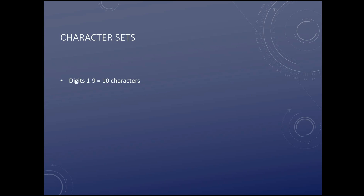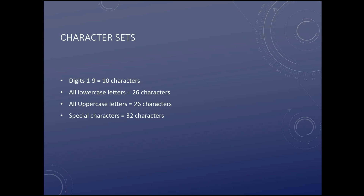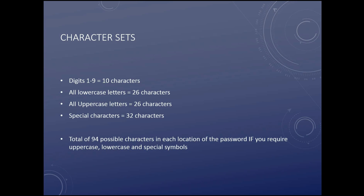Let's look at the character sets used in the formula. If we're just dealing with digits — like a PIN — that's zero through nine, which is 10 characters. We have all lowercase letters: 26. All uppercase letters: 26. And 32 special characters — parentheses, ampersand, etc. Add all those together and we have a total of 94 possible characters if we have to use one from every set.